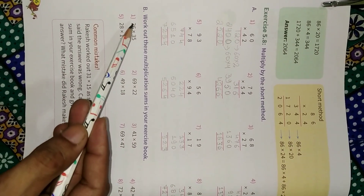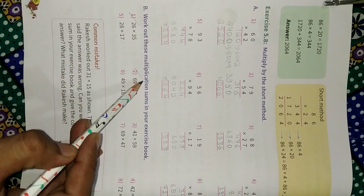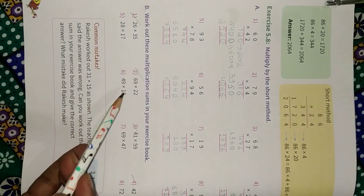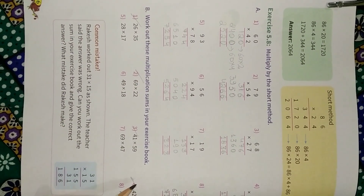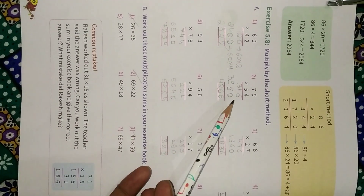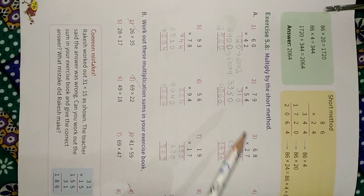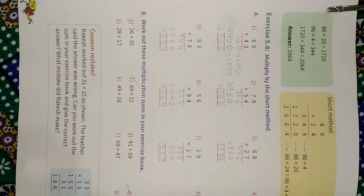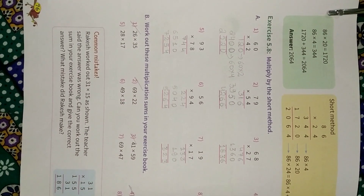Now what you have to do: solve the first four questions of the second part in your notebook. This question is to be done in the book, and Exercise 5.7 is also to be done in the book. Thank you.